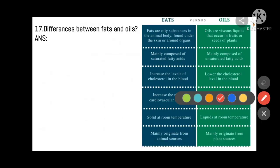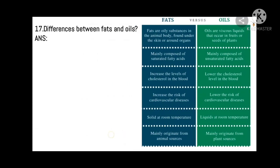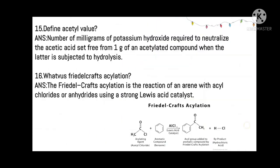Difference between fats and oils: Fats are saturated, increase the level of cholesterol, increase the risk of cardiovascular disease, and are solid at room temperature — they mainly originate from animal sources. Oils are unsaturated, do not increase cholesterol (they lower cardiovascular risk), are liquid at room temperature, and are mainly extracted from plant sources.